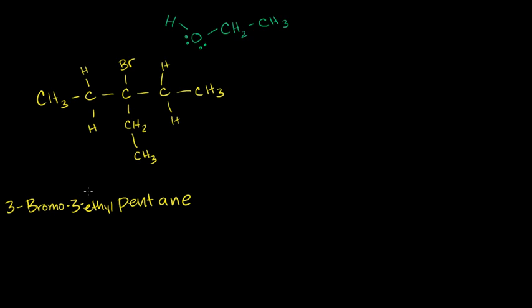So we have three bromo, three ethyl pentane dissolved in a solvent, and this right here, it's an alcohol and it has two carbons. Two carbons, so meth-eth. So it is ethanol. So this right there is ethanol. So let's think about what might happen if we have three bromo, three ethyl pentane dissolved in some ethanol.